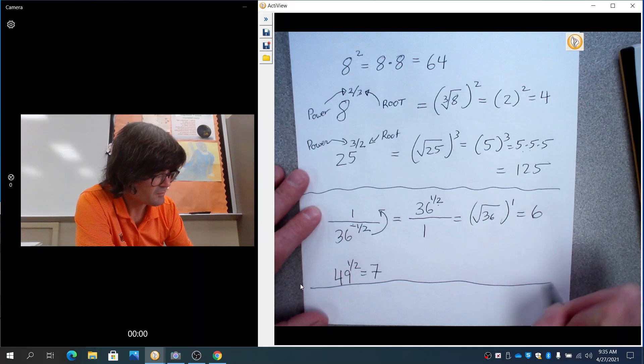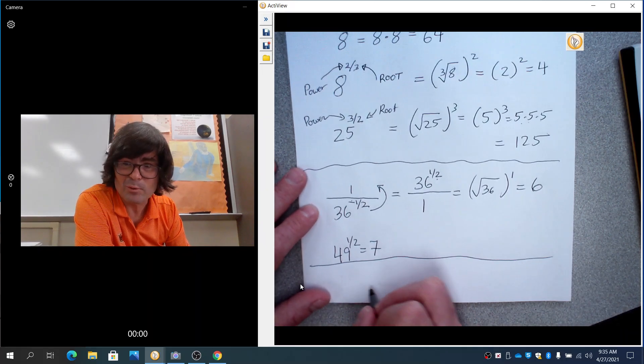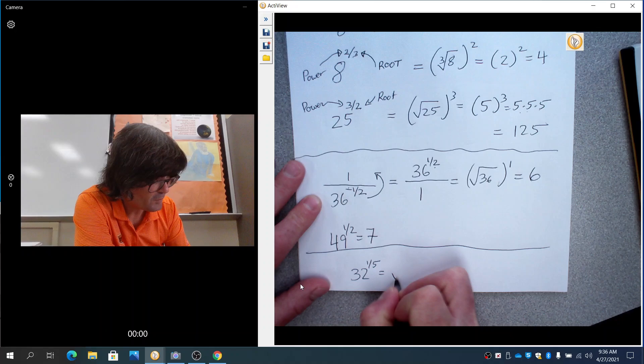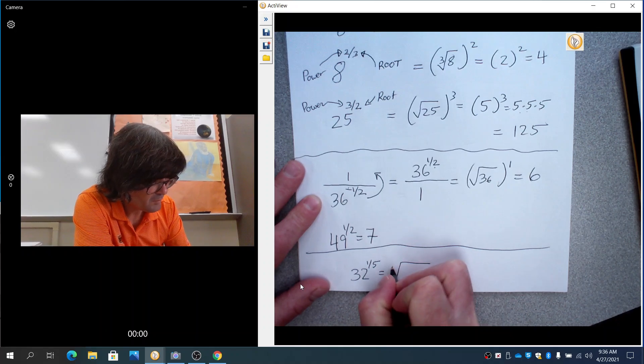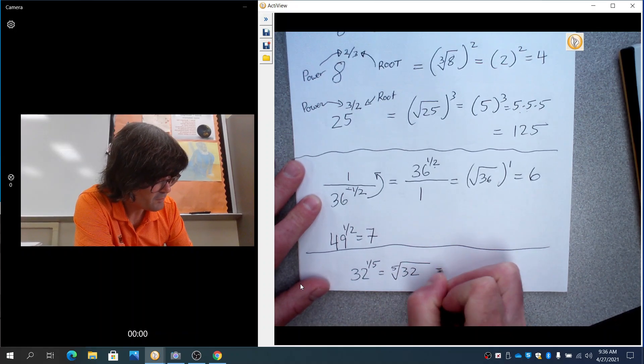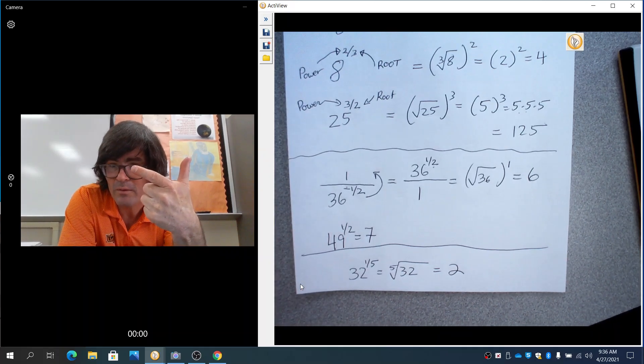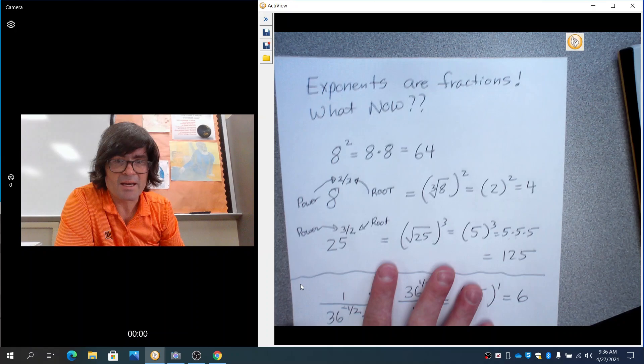And likewise, imagine you have something a little more complicated. Suppose you have like 32 to the 1 fifth power. That means the fifth root of 32, and that is 2, because 2 times 2 is 4, 8, 16, 32.